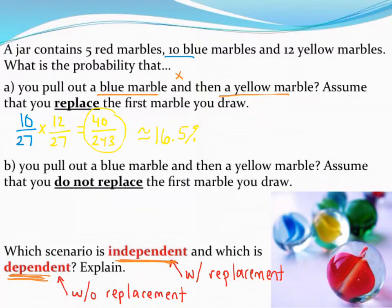Next up, let's see what happens when we do not replace the marbles. So once again, I'm going to stick with pulling a blue marble and then pulling a yellow marble. Well, first up, nothing's changed with my first blue probability. There's 10 blue marbles in the jar out of 27 marbles.